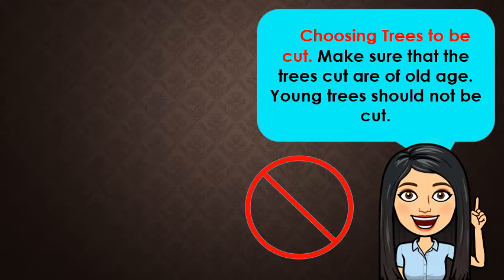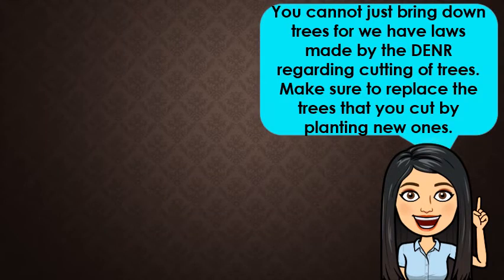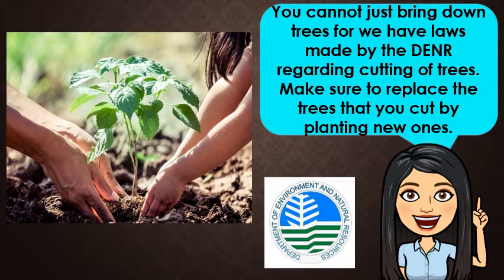What are the things that we need to consider when choosing trees to be cut? First, we need to make sure that the trees cut are of old age. Young trees should not be cut. You cannot just bring down trees, for we have laws made by the Department of Environment and Natural Resources or DENR regarding cutting of trees. Make sure to replace the trees that you cut by planting new ones.